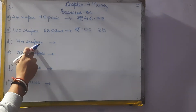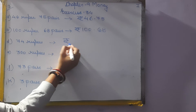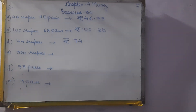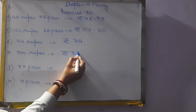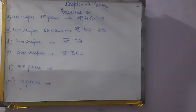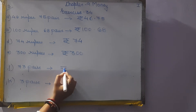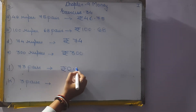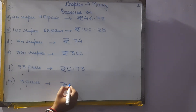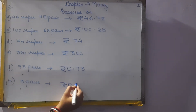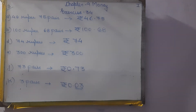68 paise. Next: 74 rupees, so rupees 74. Mark C1 as homework. E: 300 rupees, so rupees 300. Mark I as homework. J: 73 paise, so rupees 0.73. 3 paise, so rupees 0.03. We know that 1 rupee equals 100 paise, that's why we have written rupees 0.03.